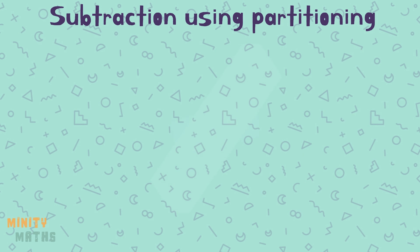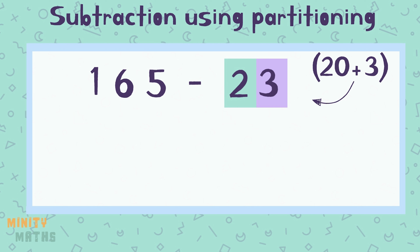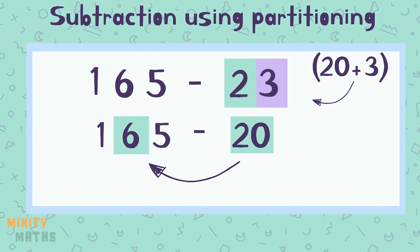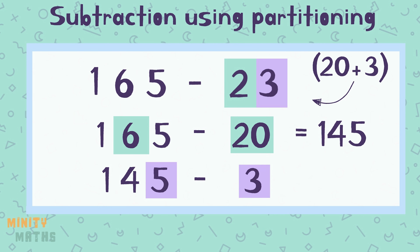To subtract using partitioning, we do this slightly differently. We can leave the first number — we don't need to partition this. Now partition the number that is being subtracted and make a note, or a mental note, of it. Then subtract the first partition away from the starting number, making a note of the answer. Then subtract the next partition away from this answer. We keep doing this until we have subtracted each number partition.